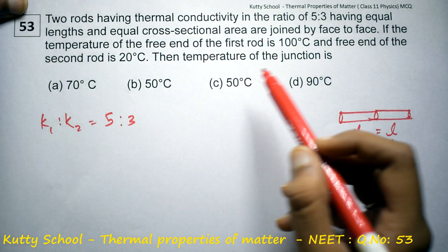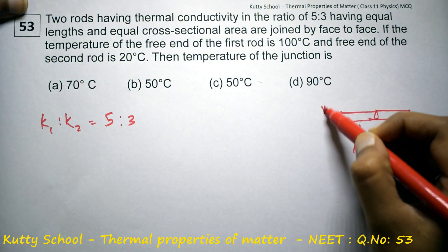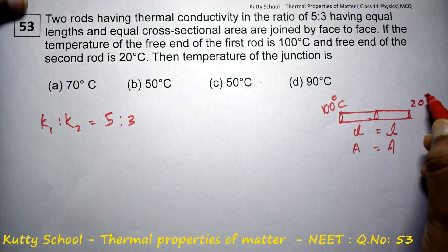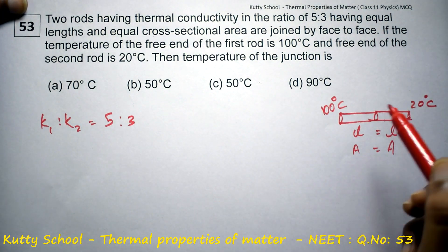If the temperature of the free end of the first rod is 100 degrees Celsius and the free end of the second rod is 20 degrees Celsius, then what is the temperature of the junction?